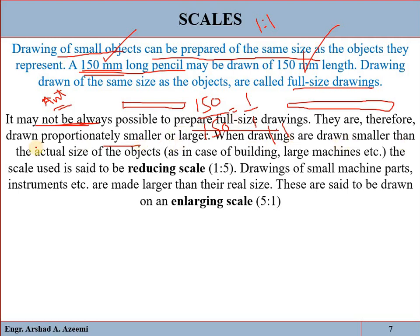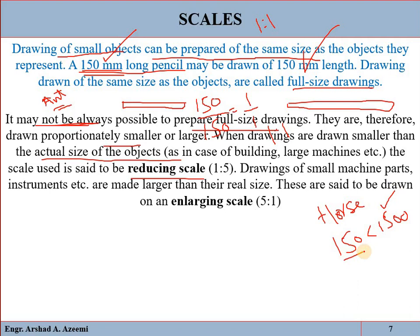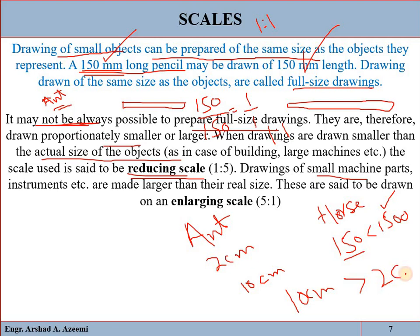When drawings are drawn smaller than the actual size of the object, it is called a reducing scale. As we discussed for the horse, the actual height was 1500 units and we drew it as 150 units — we reduced its dimensions, so that is called the reducing scale. When we have small components — for example, if actually the object is 2 cm and we draw it as 10 cm — we have increased the dimension. That is called the enlarging scale.